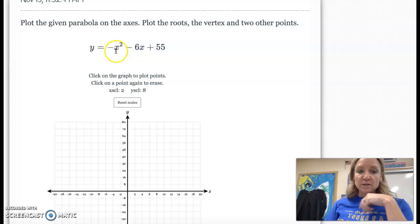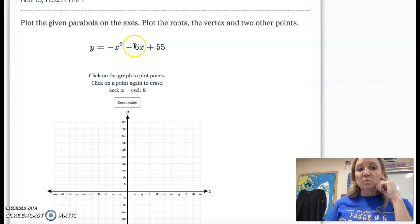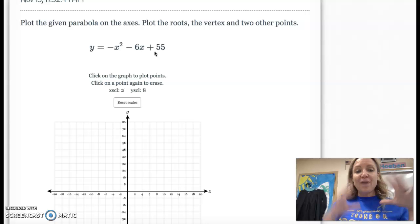And it has that negative leading coefficient again, meaning it's going to open down. So if I factor out a negative, it's going to be positive x squared plus 6x minus 55. So when you factor it to a binomial times a binomial, you should get x plus 11 and x minus 5.